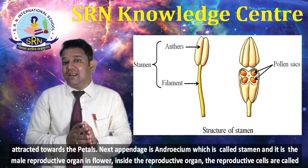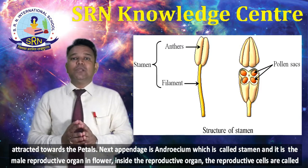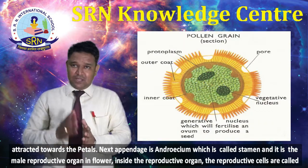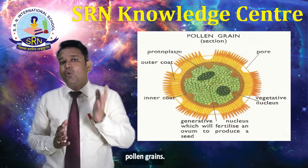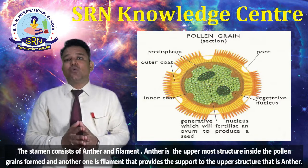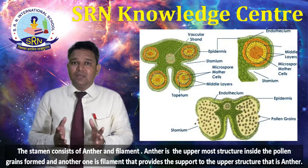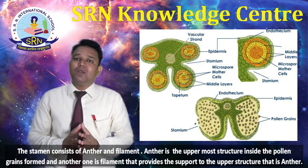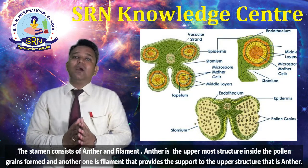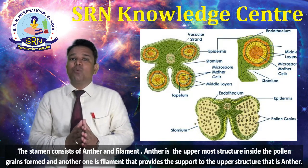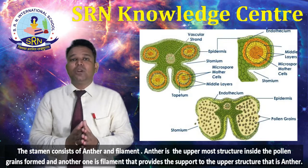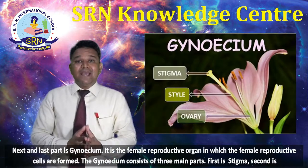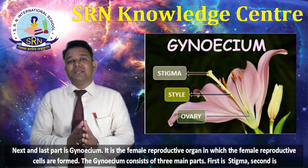Inside the male reproductive organ, the reproductive cells are called pollen grains. The stamen consists of the anther and the filament. The anther is the uppermost structure inside which the pollen grains are formed, and the filament provides support to the upper structure, that is the anther.